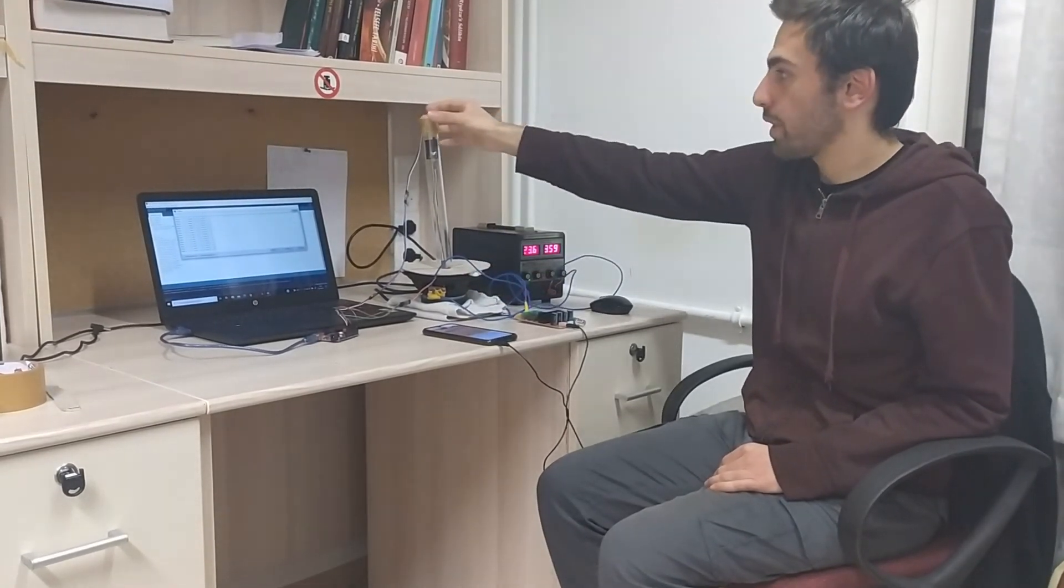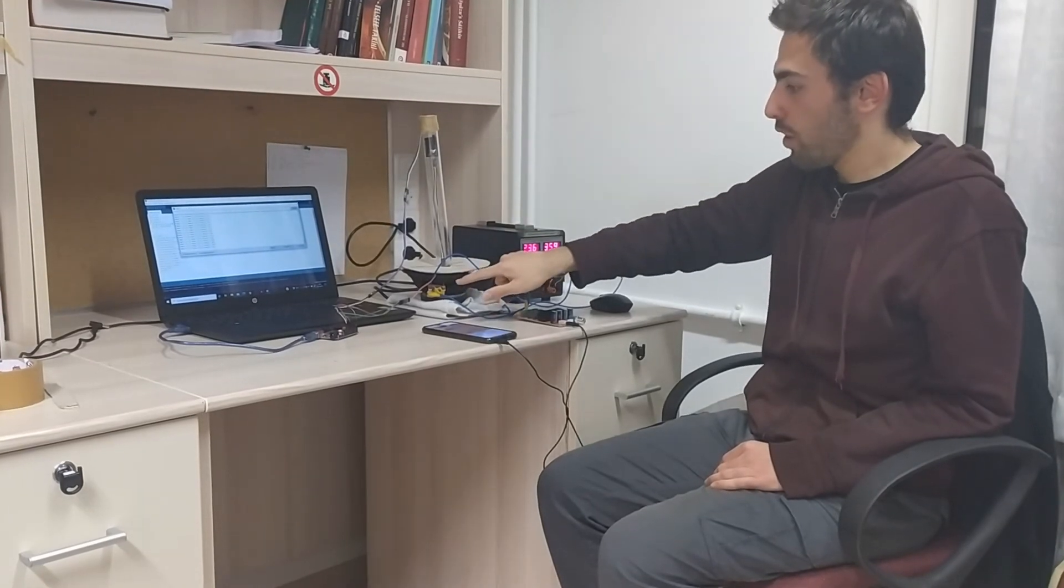The pressure antinode is located at the closed end. The pressure node is located at the open end.